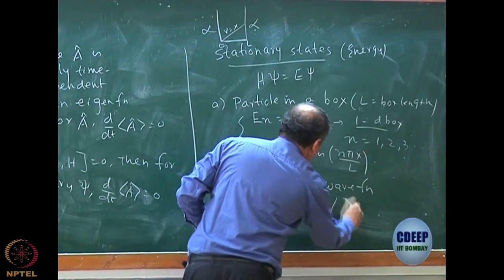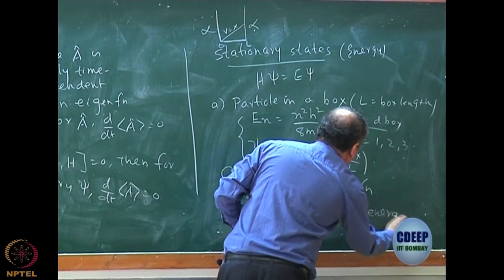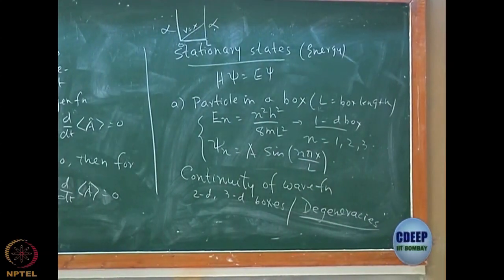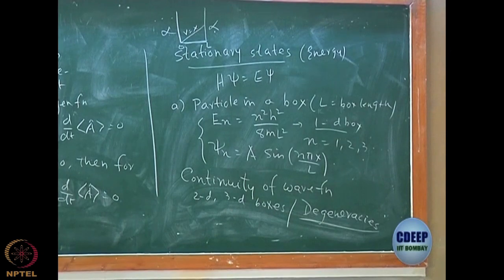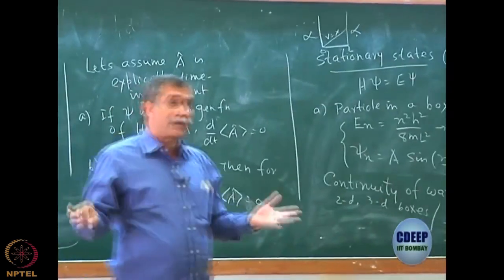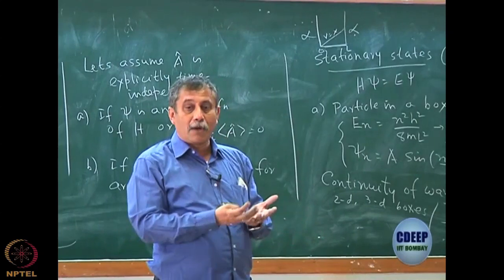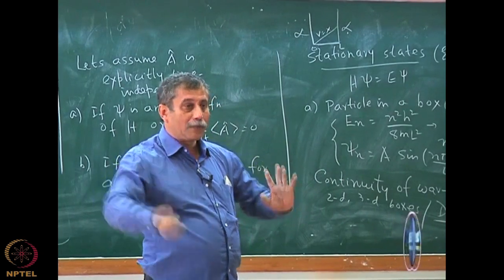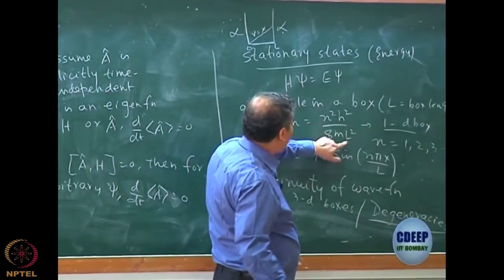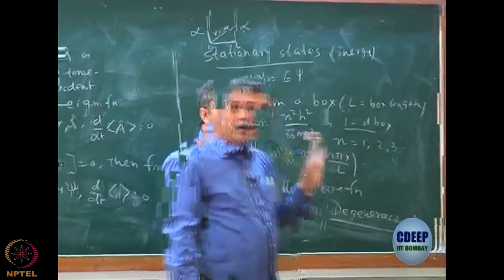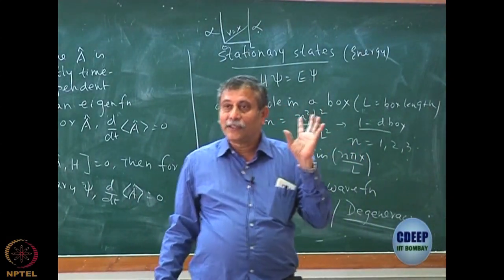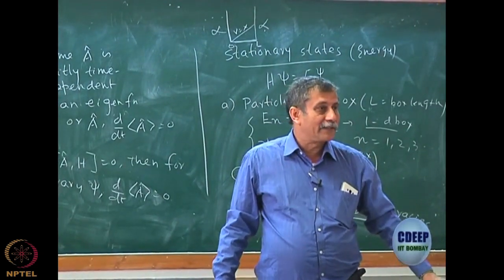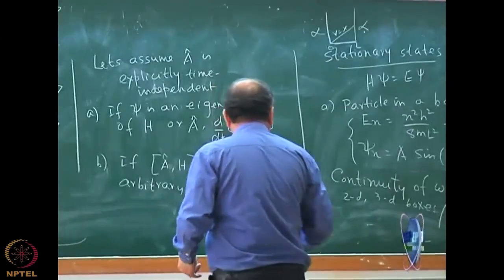For those who have problems, please revise: what are the 2D and 3D boxes? They can be a square box, a cubic box, or a 2D box with L1 and L2 lengths. Then the degeneracies become completely different — you have to find N1 and N2 such that N1 squared over L1 squared plus N2 squared over L2 squared is constant. These are very interesting arithmetic problems.